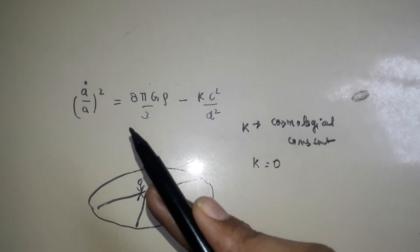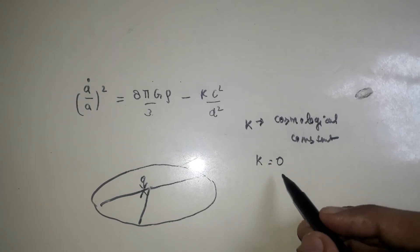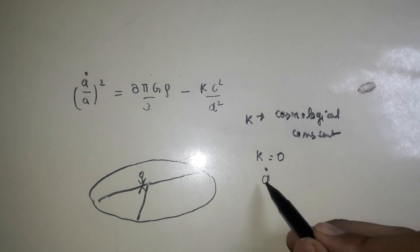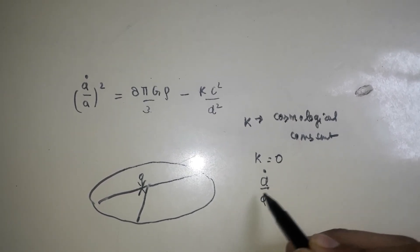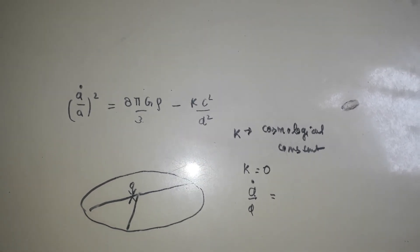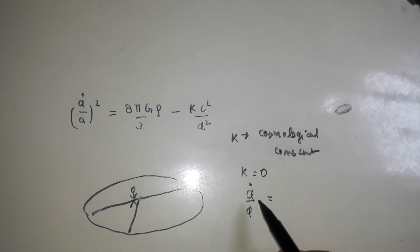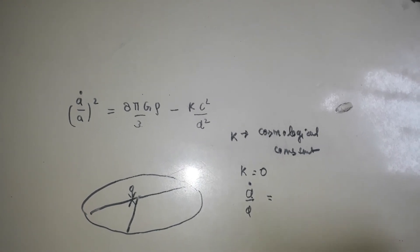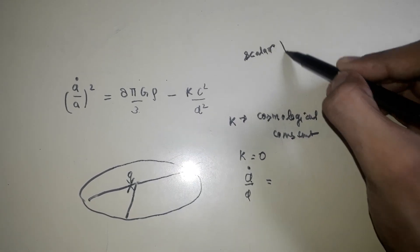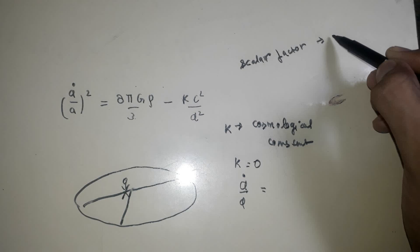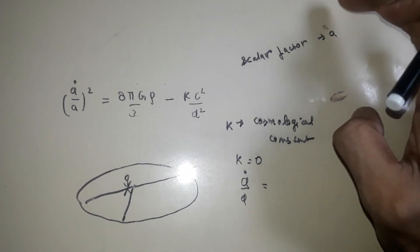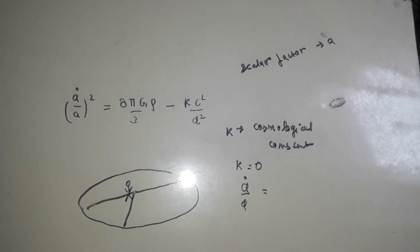What is this A with a dot? So A with dot is actually, I'll tell you what complete A with dot divided by A is. That is rate of change of scalar factor divided by scalar factor. So I tell you that this A is actually what we call scalar factor. We call A the scalar factor.